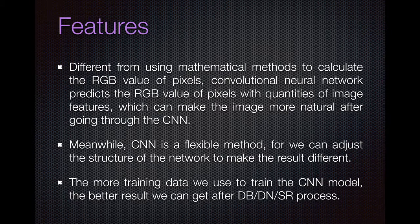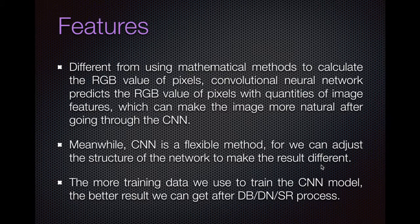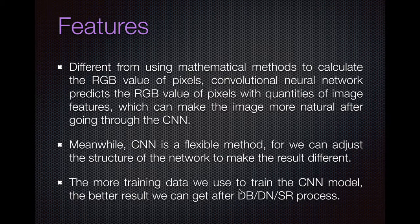My CNN model is different from using a mathematical method to calculate the RGB value of pixels. The convolutional neural network predicts RGB values of pixels using quantities of image features, which makes the image more natural after going through the CNN. Meanwhile, CNN is a flexible method — we can adjust the structure of the network to make the result different. For example, if you want to add some style to the pictures, you can just adjust the structure of the CNN. The more training data we use to train the CNN model, the better result we can get — that is a general concept of supervised machine learning: more trained data, better result.